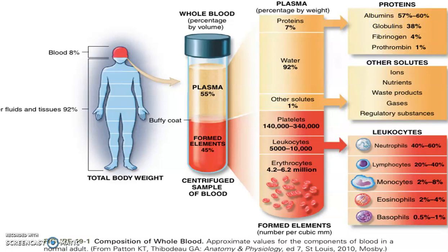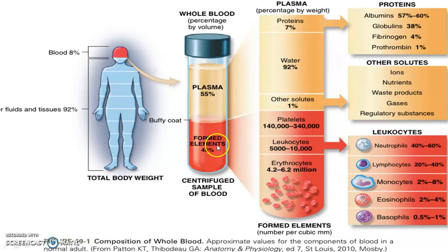Normally albumin is present at a higher level compared to globulin. In case of liver disorders, if there is any damage to the liver, the ratio gets reversed — this is termed the A/G ratio, where globulin will be high. Fibrinogen and prothrombin are important plasma proteins involved in the clotting of blood. Other solutes include ions such as sodium, potassium, chloride, and bicarbonate, as well as nutrients, waste products like urea and creatinine, gases, and regulatory substances.